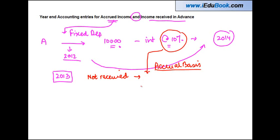So if he's earned 10% on this, let's say first year 10% on 10,000 is 1,000. This 1,000 is an income which he has earned though he has not received.